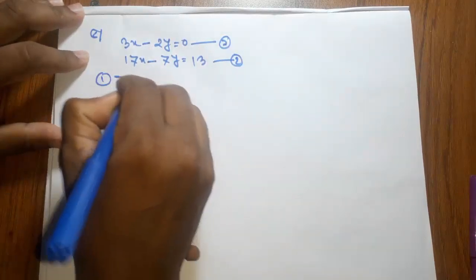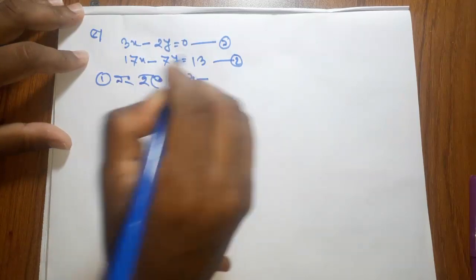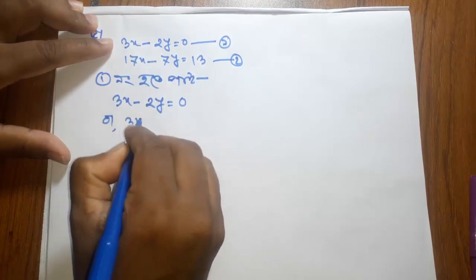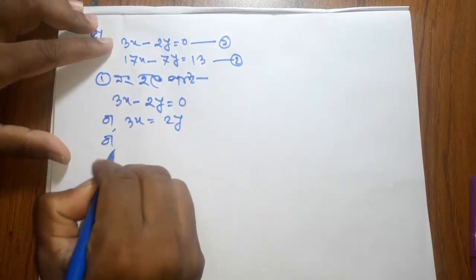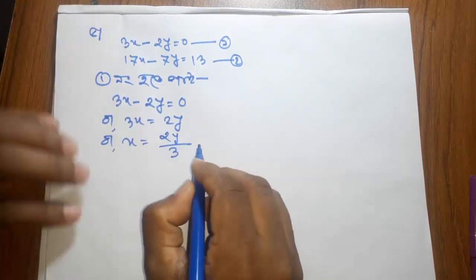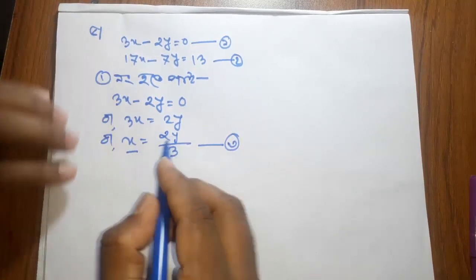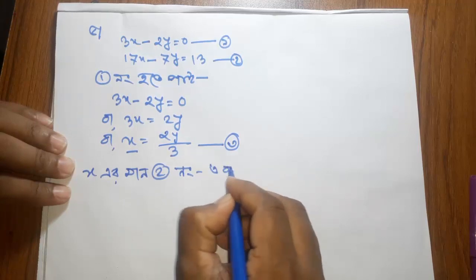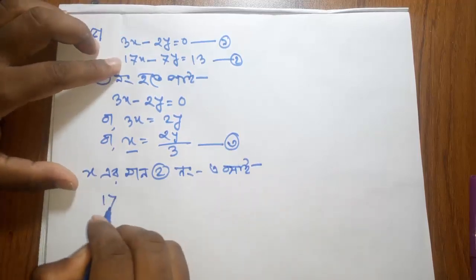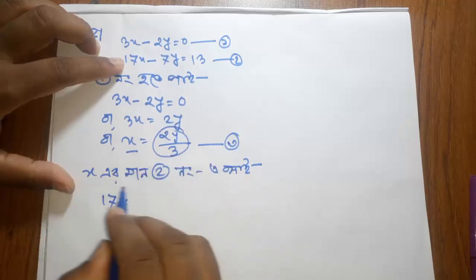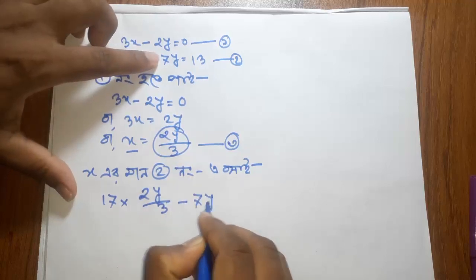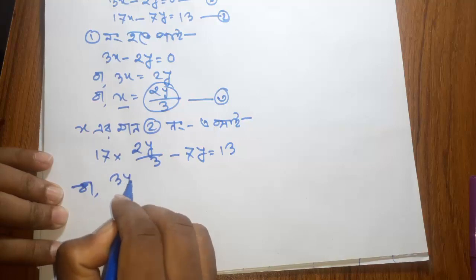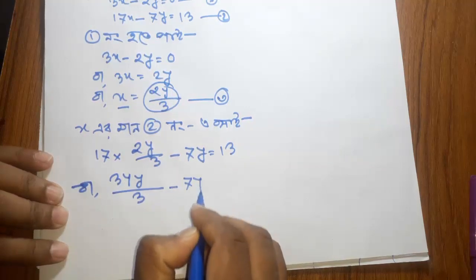9y, 9y, 9y. Number: 3x minus 2y equals 0. So 3x1 is 2y. Minus 2y is plus. 1, 1 is 2y is 3y. The number is 17 into 7y by 3 minus 7y by 7. 3 is equal to 34. 34y by 3 minus 7y is equal to 13.